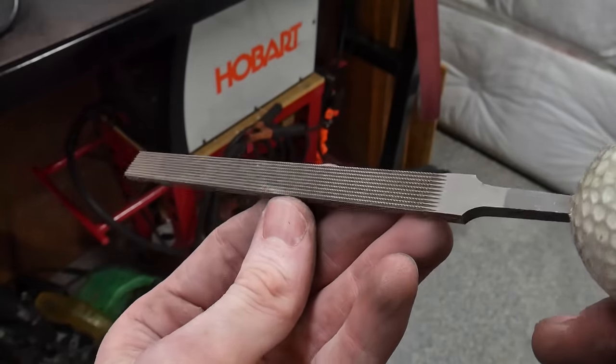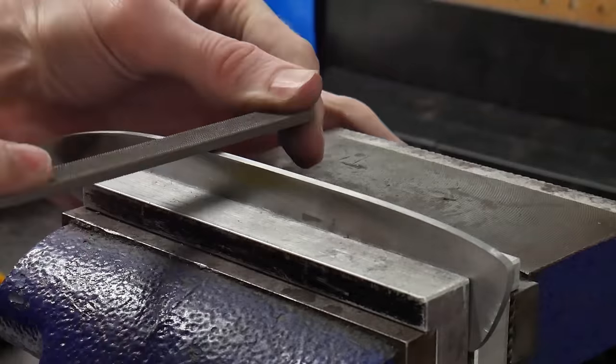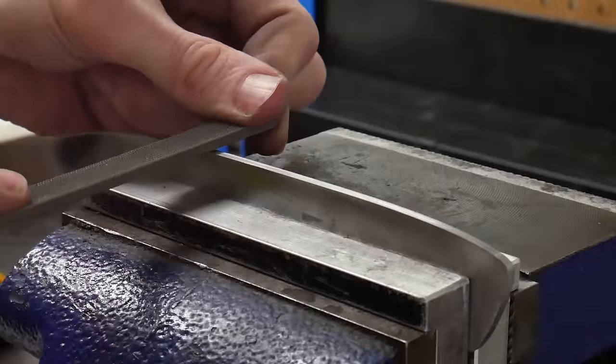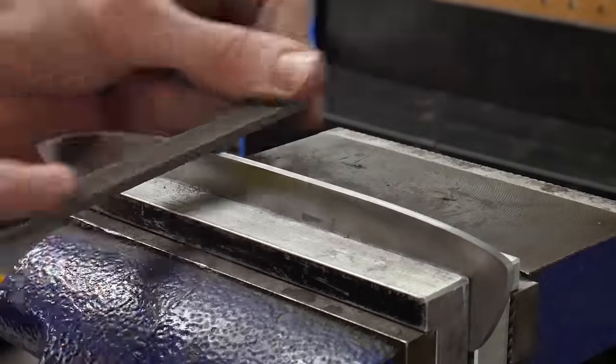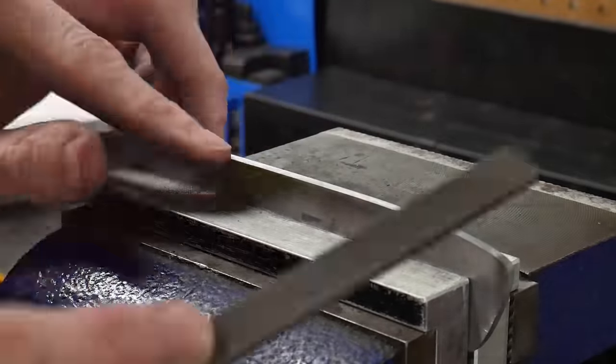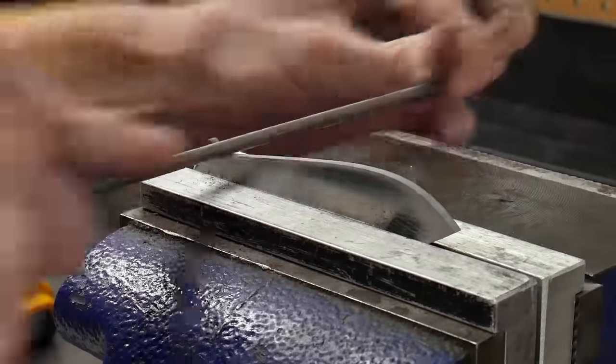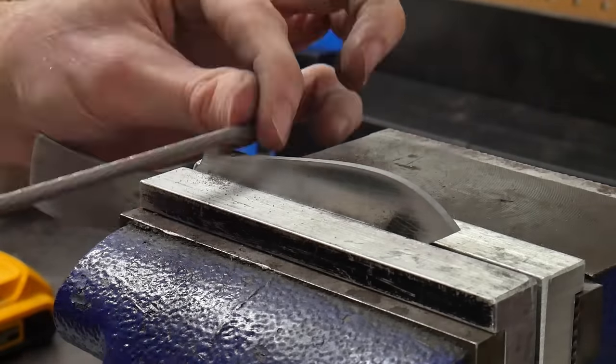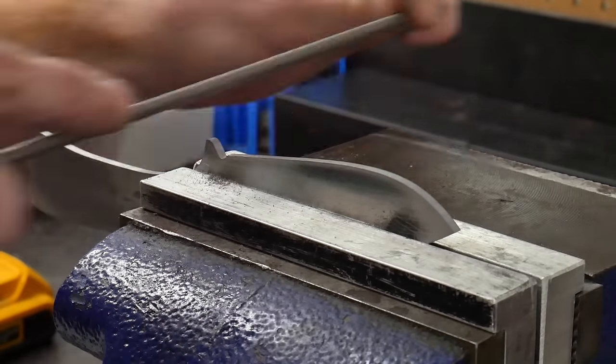Using a checkering file, I carefully file in some jimping on the spine of my blade around the location the user's thumb will land. I'll also be using a 3/16 of an inch chainsaw file to file in my sharpening choil. Both of these operations need to be done before the heat treating of the blade since the files will not be able to cut into the steel post heat treatment.